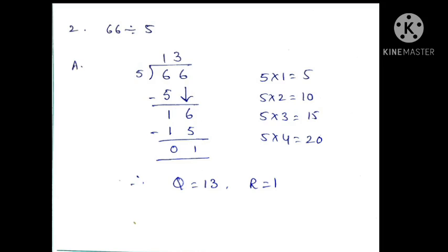Then see the table: 5 threes are 15, 5 fours are 20. Compared to 16, 20 is bigger. So we take 5 threes are 15. This 3 we write above the line, and this 15 we write below the 16. Then subtract: 16 minus 15 is 1. Therefore the quotient is 13 and the remainder is 1.